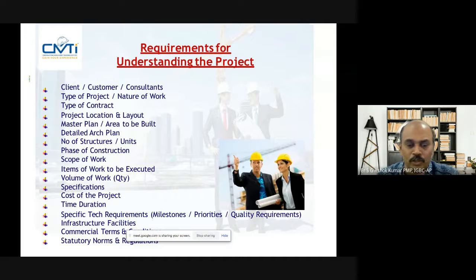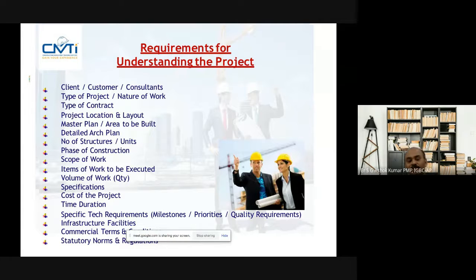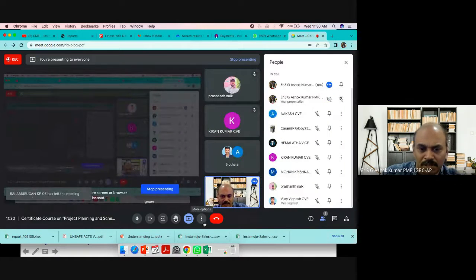Quality requirements — we should check each and every material which is coming to the project; it has to be validated. Next is infrastructure facility — you should have the proper temporary infrastructure to do the work in the project. You should know the terms and conditions mentioned in the document, and the local bylaws — what is the minimum required, whether work is permitted or not. All this information you should know while doing project management.